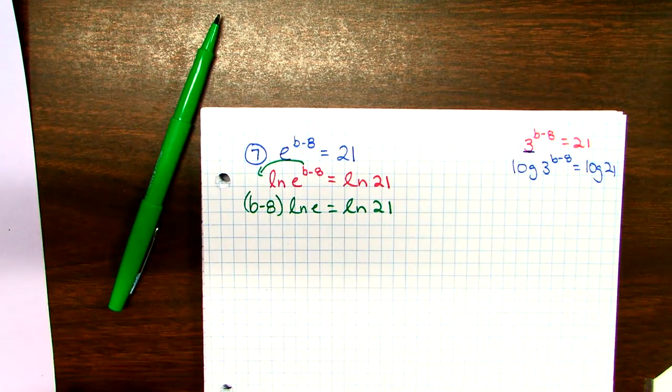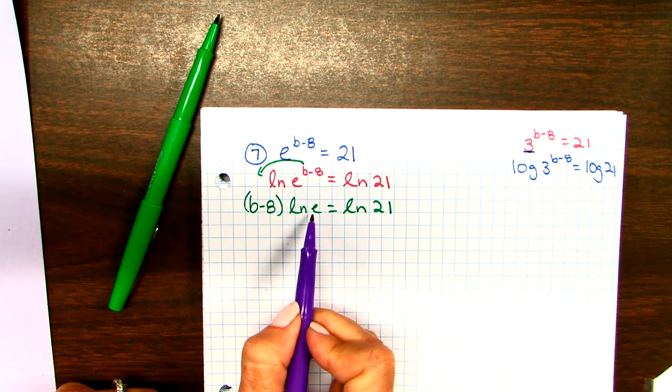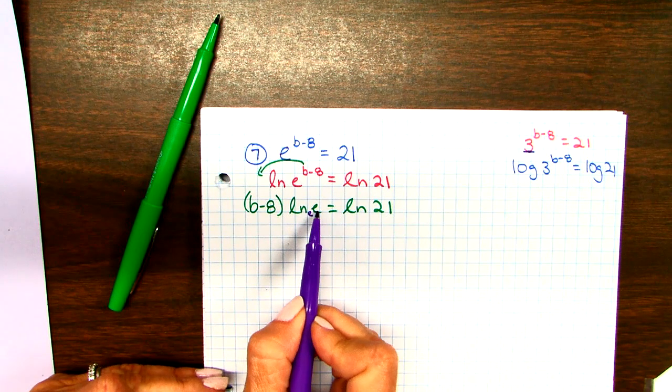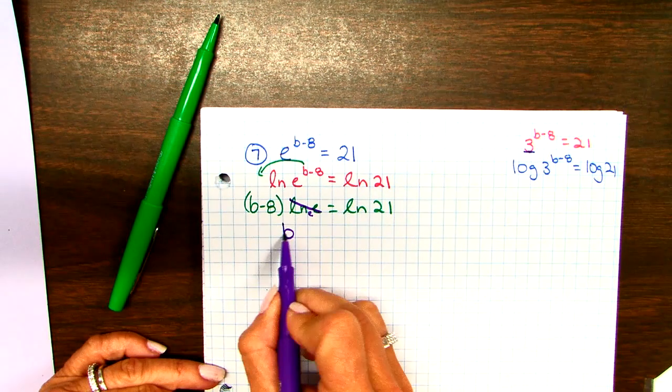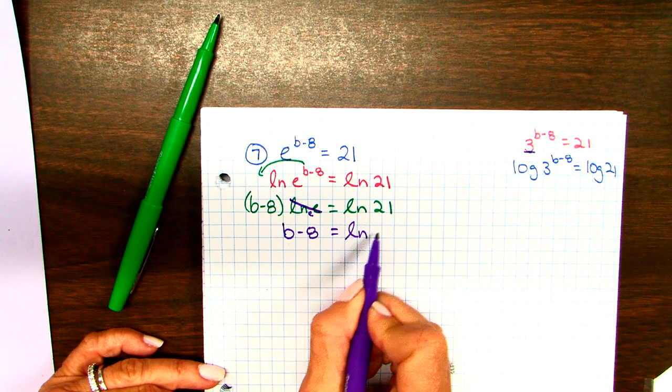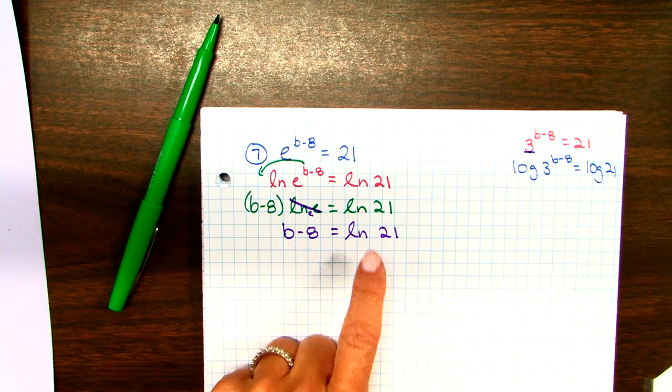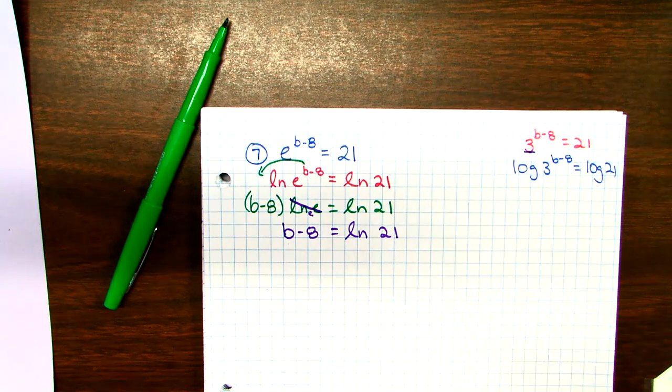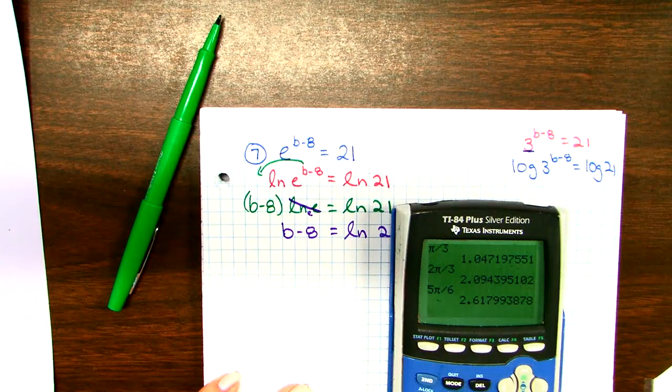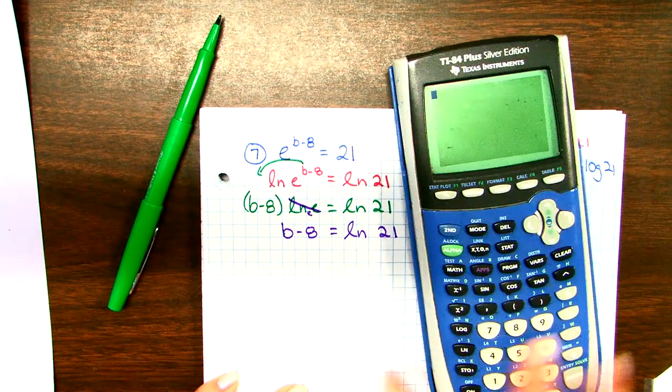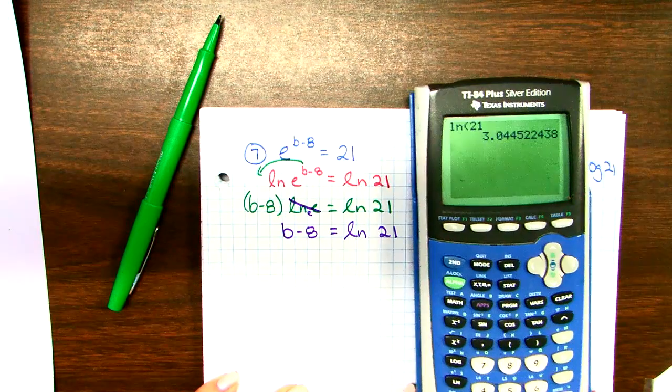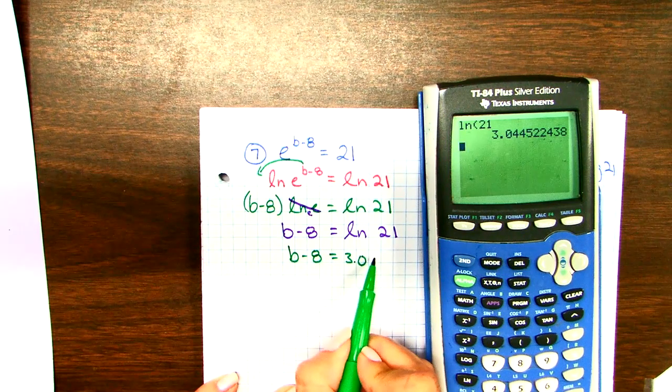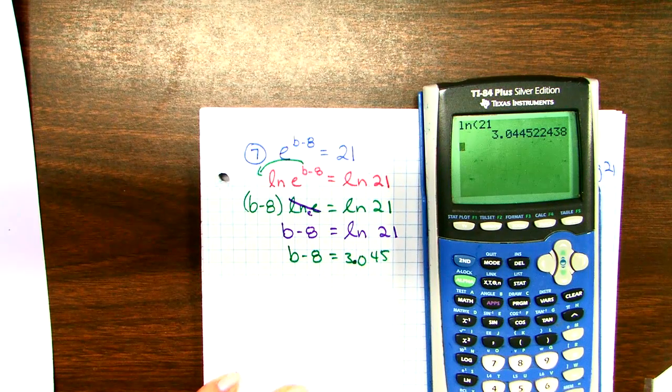We learned that natural log E equals 1. You can just cancel it out. That's going to happen in all of those problems, 7 through 11. Natural log E is just 1. Because it's a base E and an E there. That equals 1. So you're just left with this. Now, I'm going to do natural log 21 in my calculator. And then I'm going to add 8 to it. So, remember where your LN button is. LN 21. Hit enter. So I have B minus 8 equals 3.045.